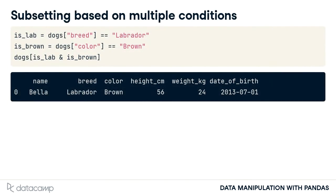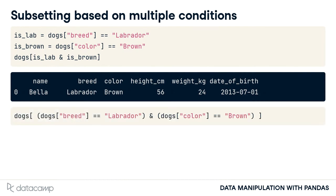To subset the rows that meet multiple conditions, you can combine conditions using logical operators, such as the AND operator. This means that only rows that meet both conditions will be subsetted. You could also do this in one line of code, but you'll need to add parentheses around each condition.